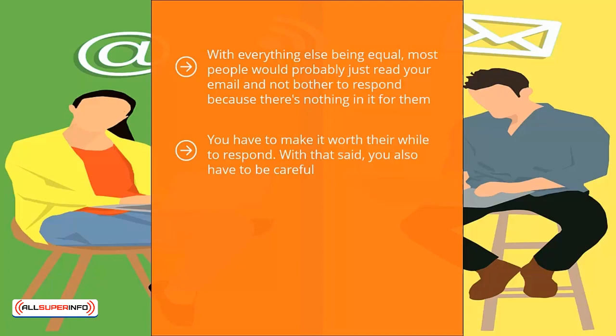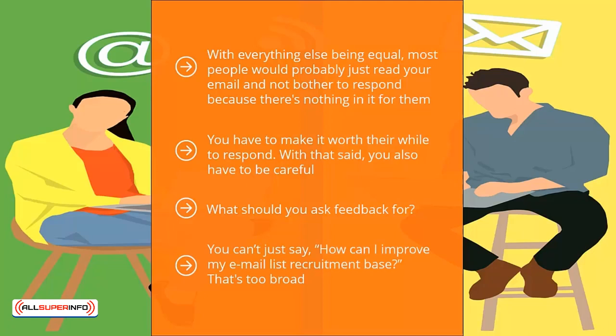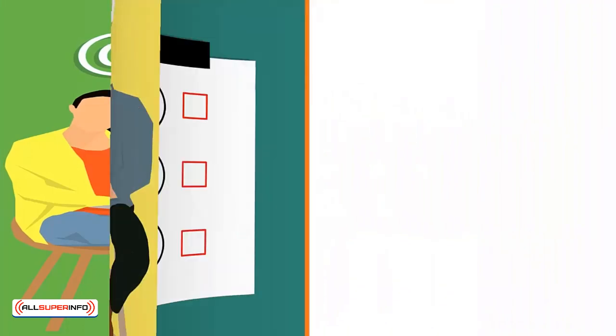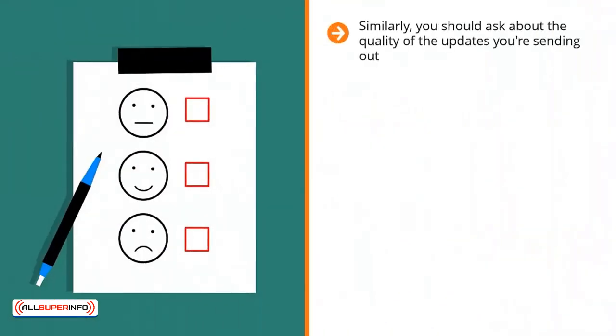Pose some sort of incentive that is attractive enough for people to want to respond to your outreach, however it shouldn't be so attractive that you get fake results. What should you ask feedback for? Ask for how your squeeze page can be made better, but break down the squeeze page elements one by one. Don't just say 'how can I improve my email list recruitment page' — that's too broad. Instead, ask about specific elements: am I using the right graphic? Is the text easy to understand? Is the value proposition behind the incentive I'm giving away very clear?